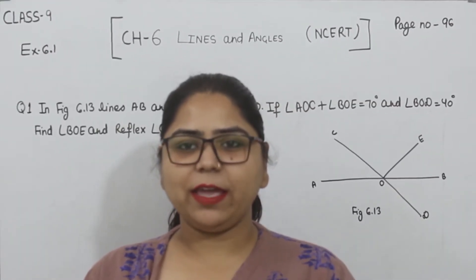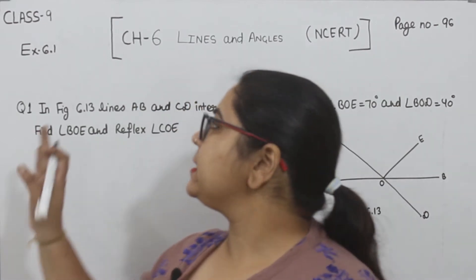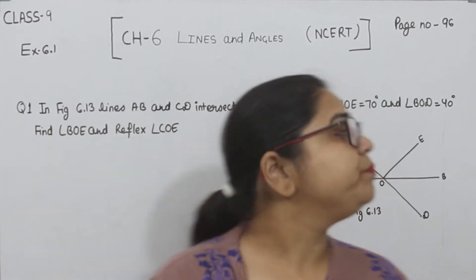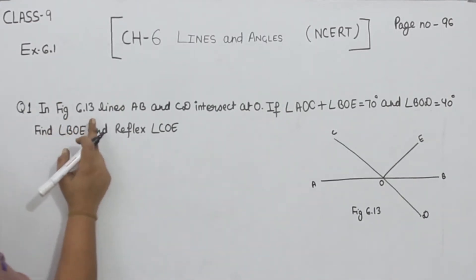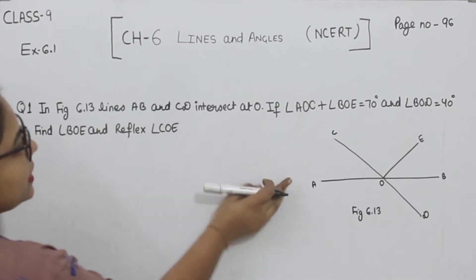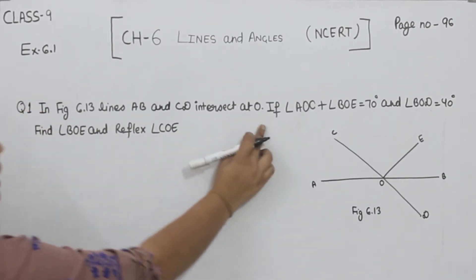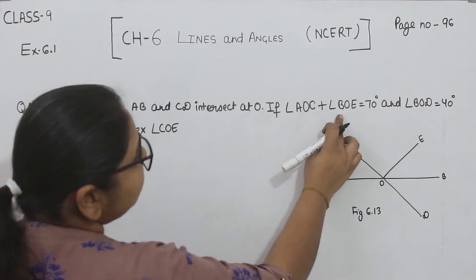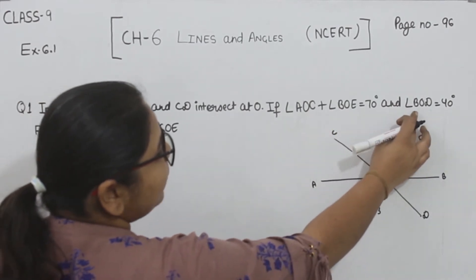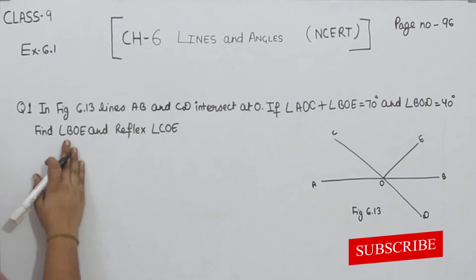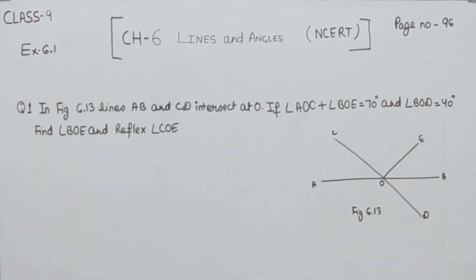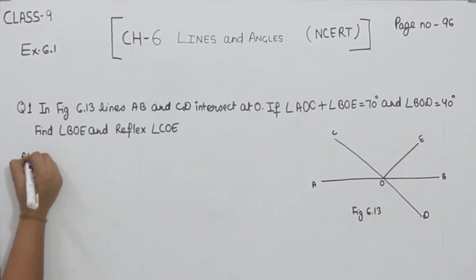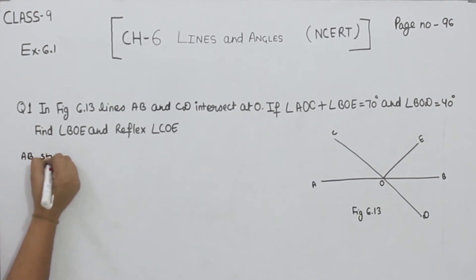Hello everyone, this is Preeti. We are here with another question from Exercise 6.1, page number 96, question number 1. In figure 6.13, lines AB and CD are intersecting at point O. If angle AOC plus angle BOE is equal to 70° and angle BOD is equal to 40°, find angle BOE and the reflex of angle COE. So we start with the first one — we will take AB as a straight line.